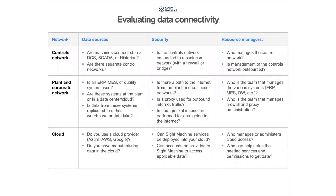For example, if you're on a controls network, how does that connection get bridged via a firewall, a historian, or other type of connection? If you're within a cloud, who is that cloud provider, and who is the team managing it? Are they the same team managing the controls network or the corporate network within your organization?